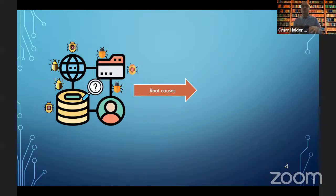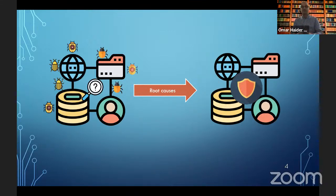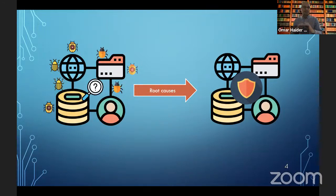We categorize bugs based on the root causes they have. Once we have figured out the root causes, we try to come up with a defense that takes away those root causes as well as those bugs. This is generally a good workflow for the kind of research I've been doing. Now there are exceptions to it - in many cases I've done work where we are trying to build secure-by-construction systems. But for the purpose of this talk, let's assume this is the workflow we are going to follow.